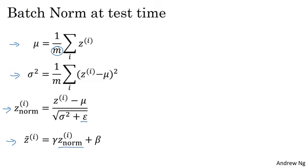So notice that mu and sigma squared, which you need for this scaling calculation, are computed on the entire mini-batch. But at test time, you might not have a mini-batch of 64, 128, or 256 examples to process at the same time.